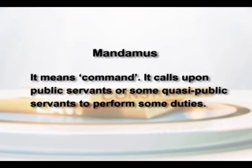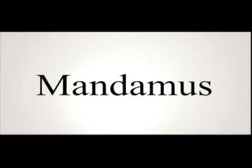Mandamus means command. It calls upon public servants or quasi-public servants to perform some duties. Mandamus can be issued against the government also in compliance with Articles 226 and 361, in which it has been stated that a case can be filed against the government for negligence of its duty. Thus, mandamus is issued against dereliction of duty. The writ of mandamus is an important jurisdictional remedy in which an order is passed by a superior institution to a subordinate court or authority to either take a particular form of action or refrain from doing it, backed with legal rights and reasoning.